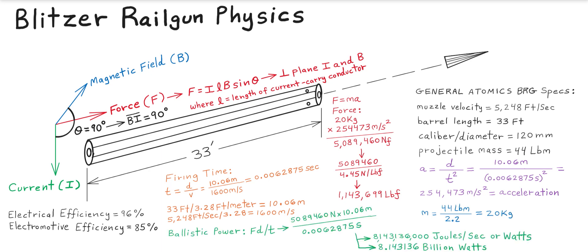We compute the ballistic power as force times distance divided by time. We multiply our newtons force times barrel distance in meters to get newton-meters or joules, then divide by the firing time to get joules per second or watts. There is 8.143 billion watts of ballistic power involved with launching the projectile out of the General Atomics Blitzer Railgun.